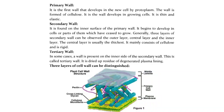The secondary wall is found on the inner surface of the primary wall. It begins to develop in cells or parts of them which have ceased to grow. Generally, three layers of secondary wall can be observed: the outer layer, central layer, and the inner layer. The central layer is usually the thickest. It mainly consists of cellulose and is rigid.